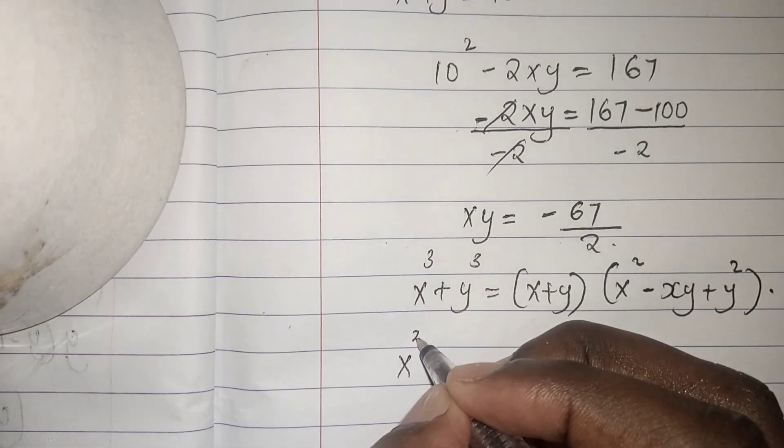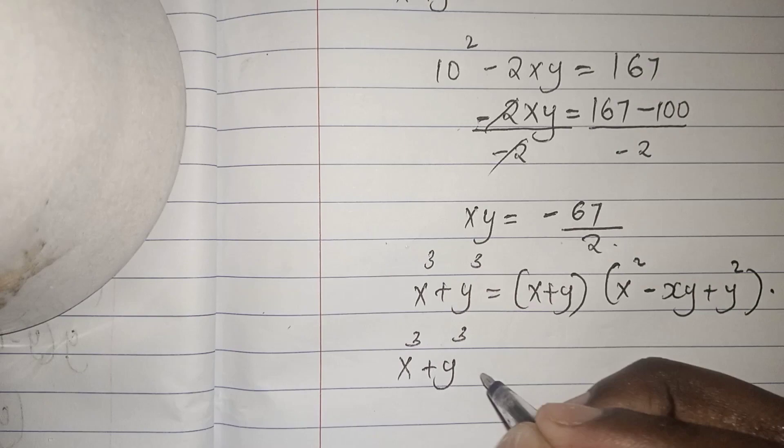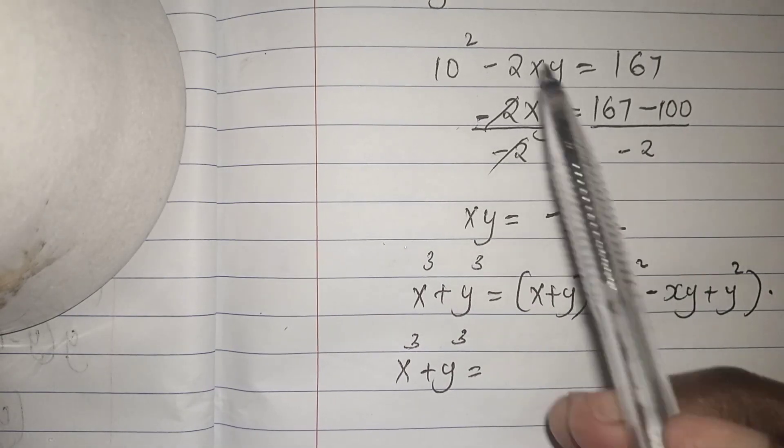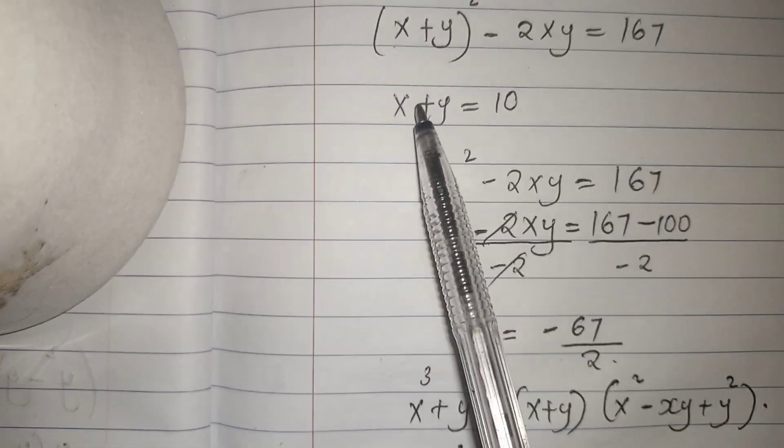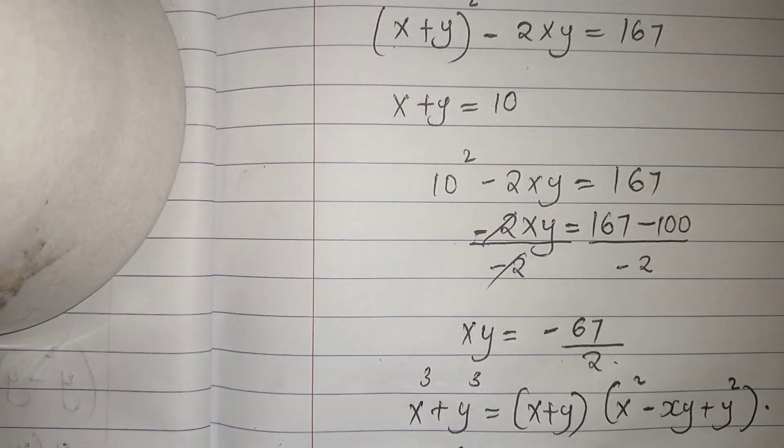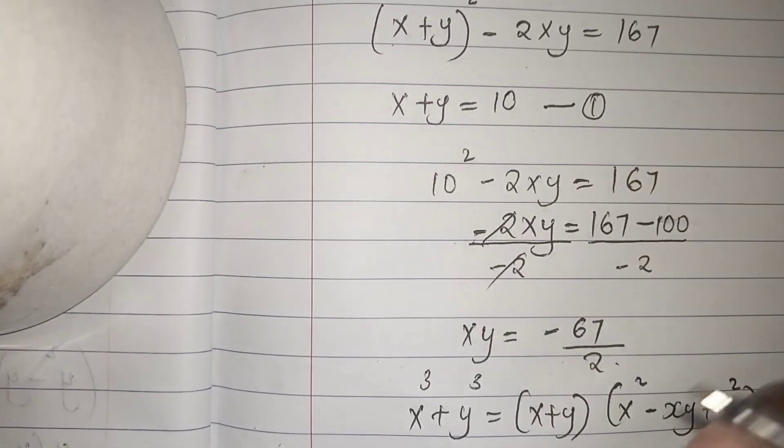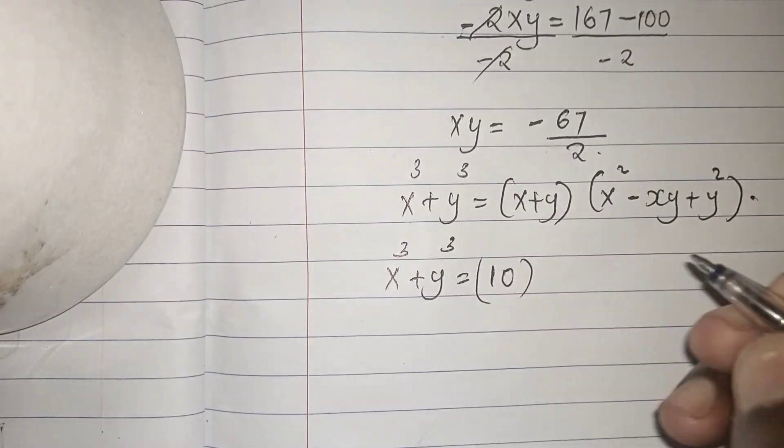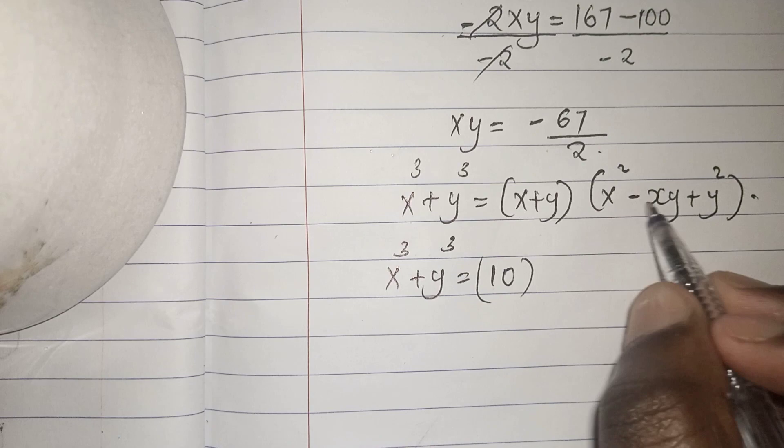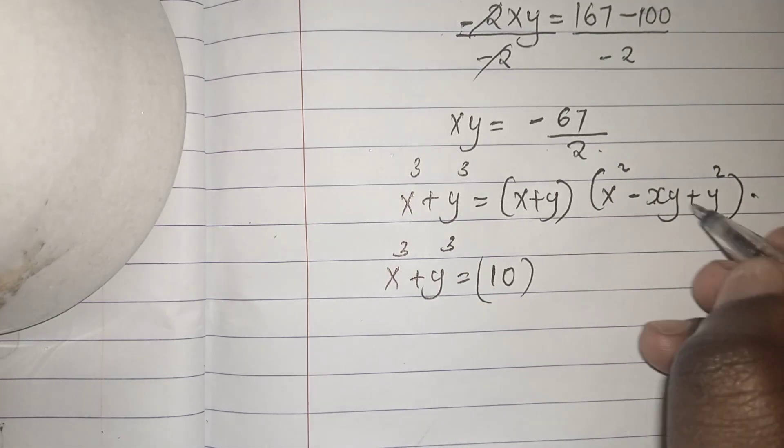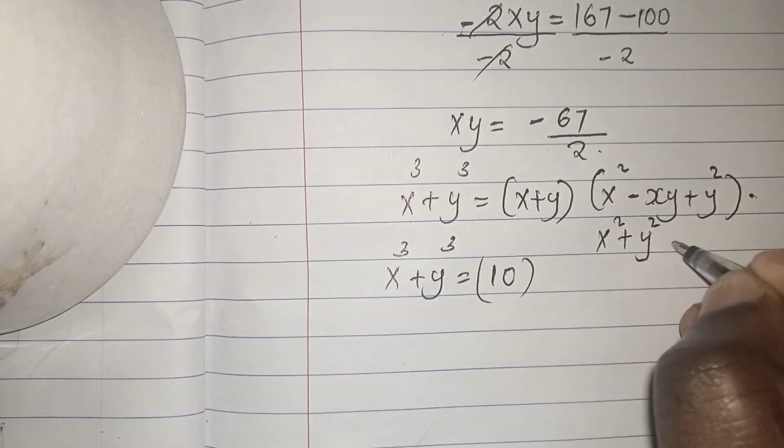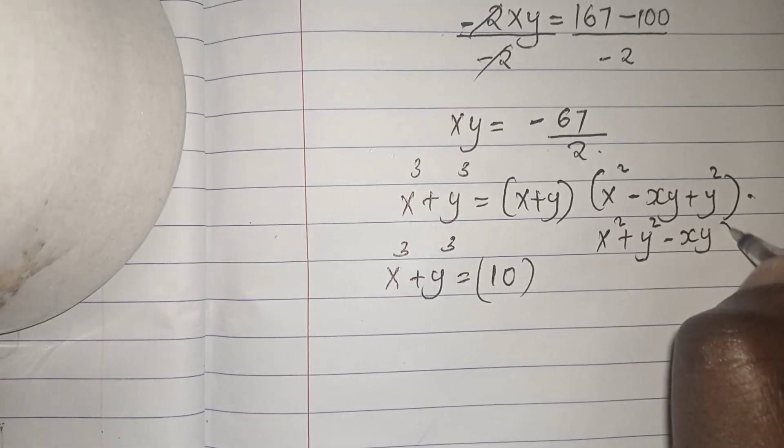So x cubed plus y cubed equals x plus y from our equation 1, sorry. x plus y equals 10. So x plus y gives us 10 into bracket x squared minus xy plus y squared. We can rearrange it and write it as x squared plus y squared minus xy.